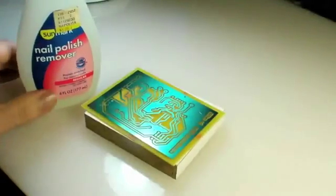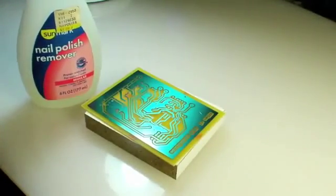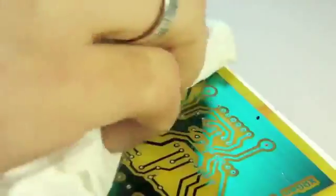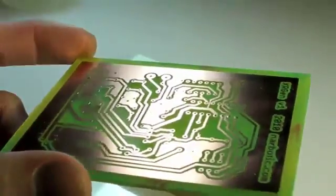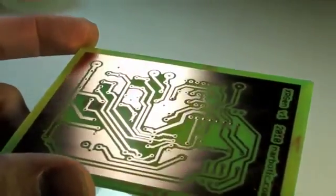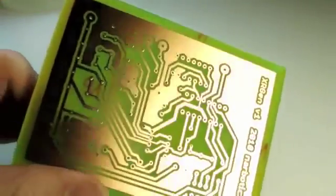Once all the holes are made, I use some nail polish remover and paper towel to wipe off the resist. Once the board is totally clear of resist, well, that's it. It's done. And it does look pretty.